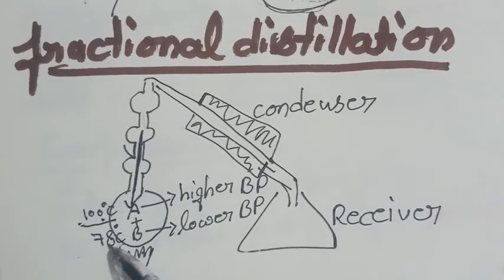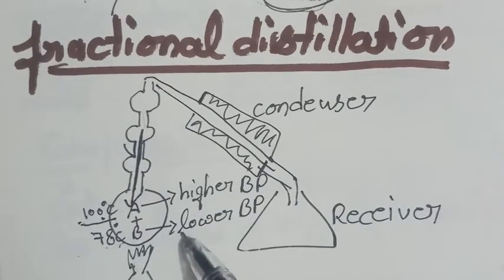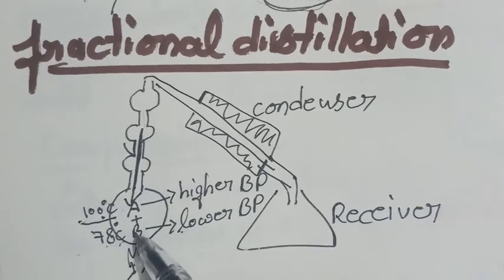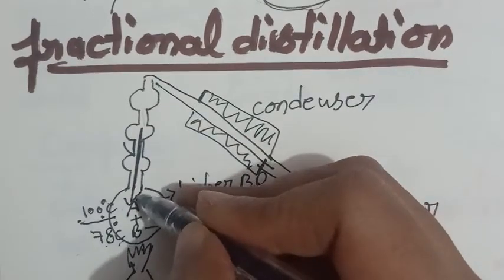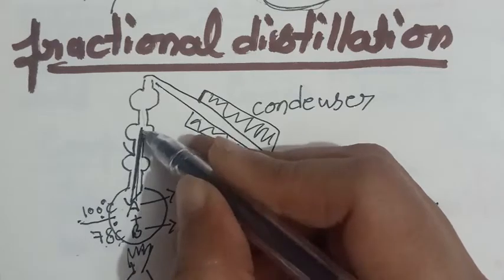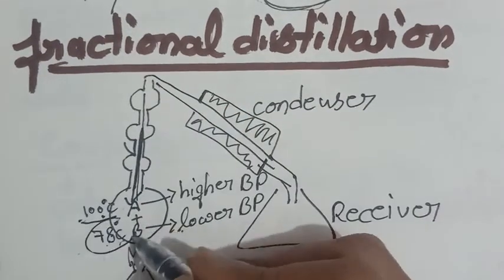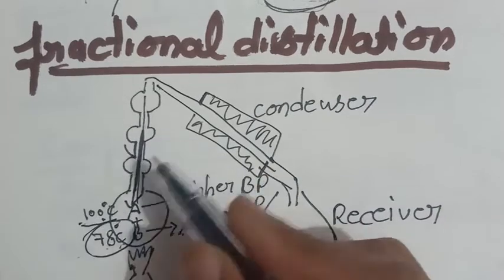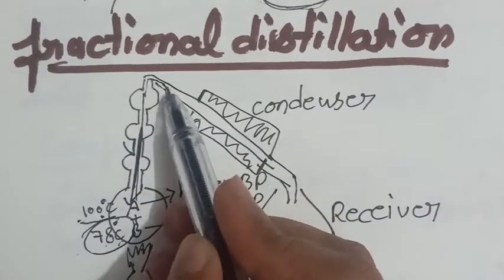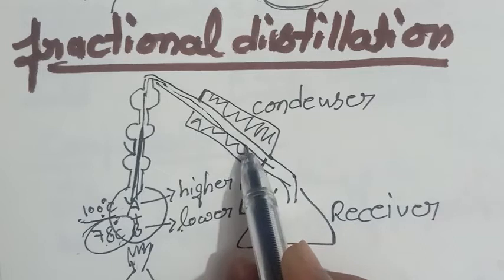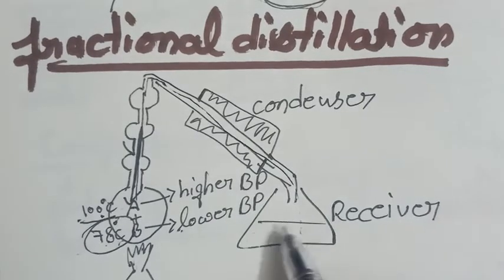Whereas, this alcohol, being lower boiling point, the molecules of alcohol will convert it into the vapor and they will easily cross these fractions because their boiling point is less compared to this one. And then, in condenser, they will again convert it into the liquid and will be received into the receiver.